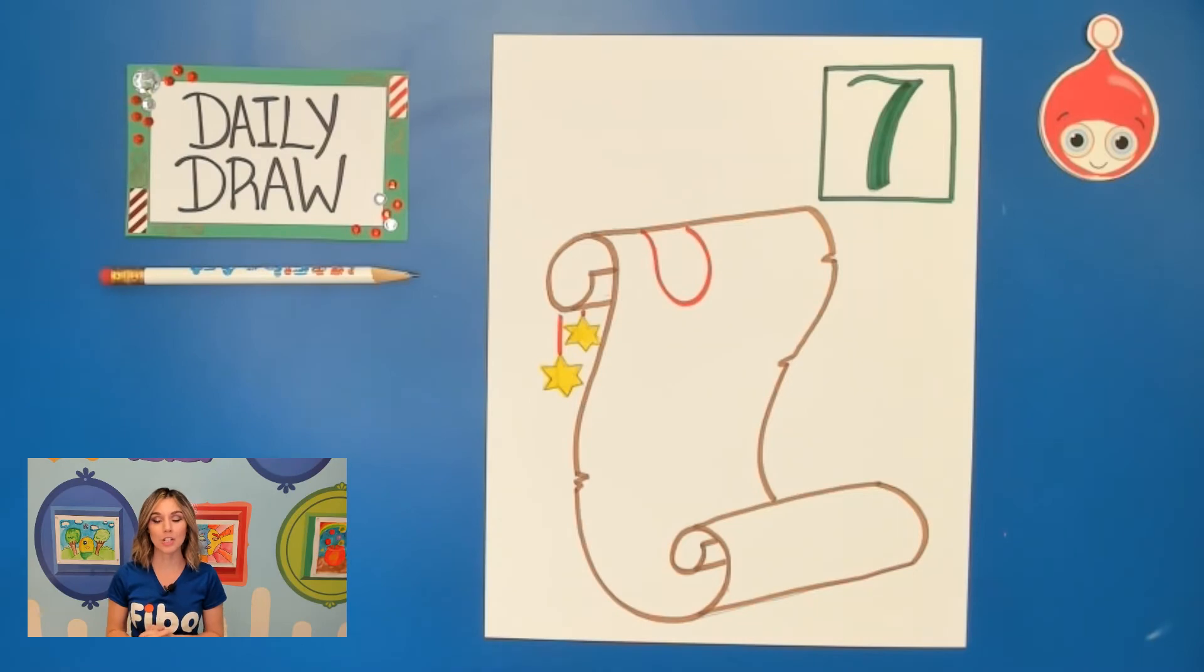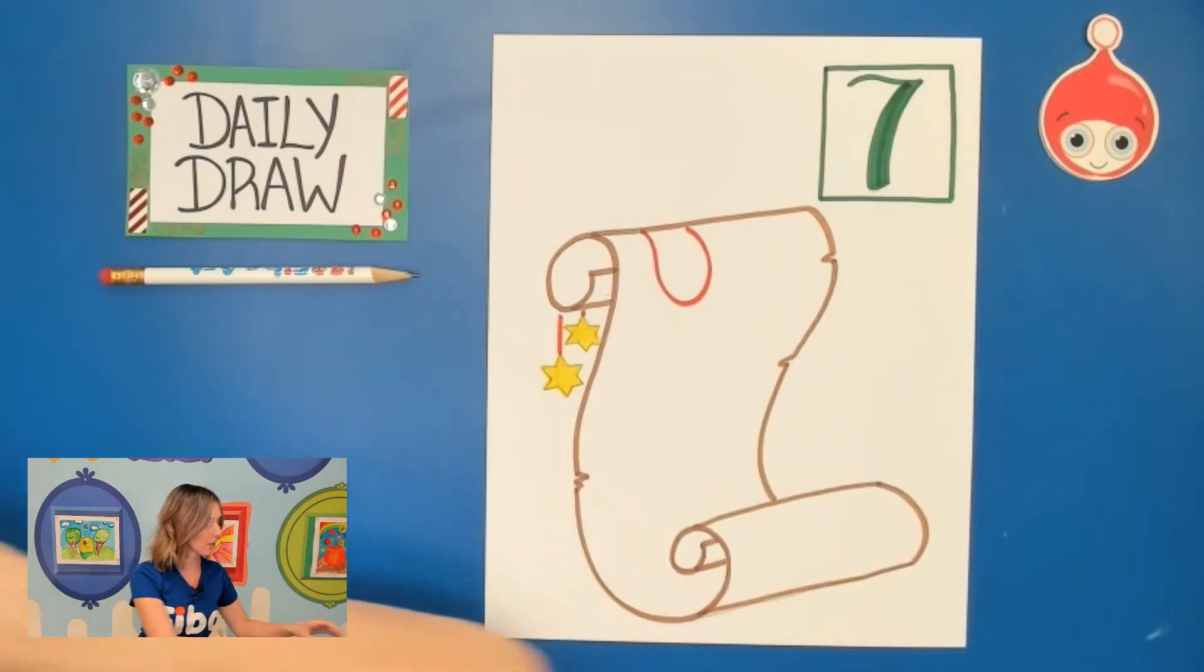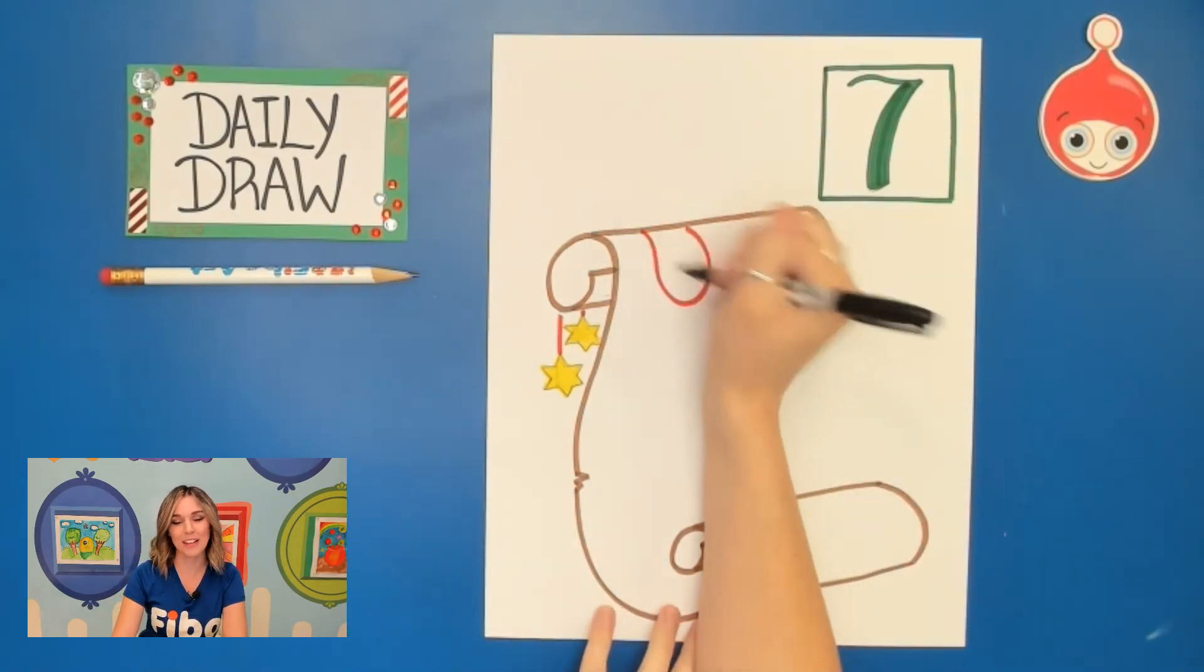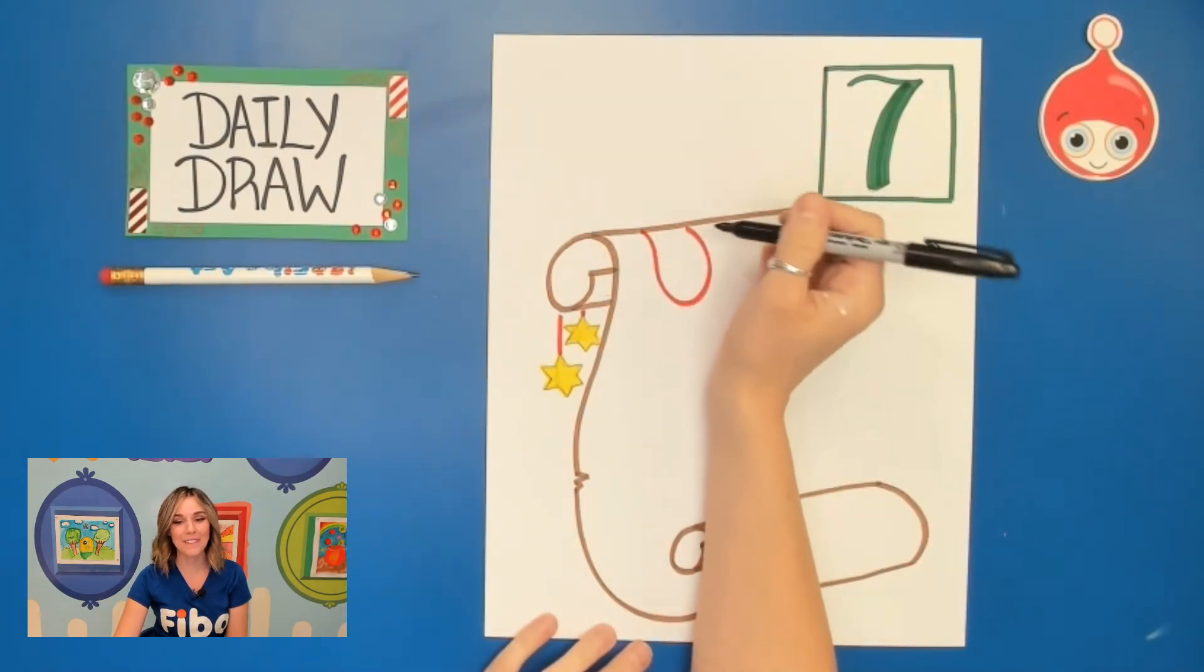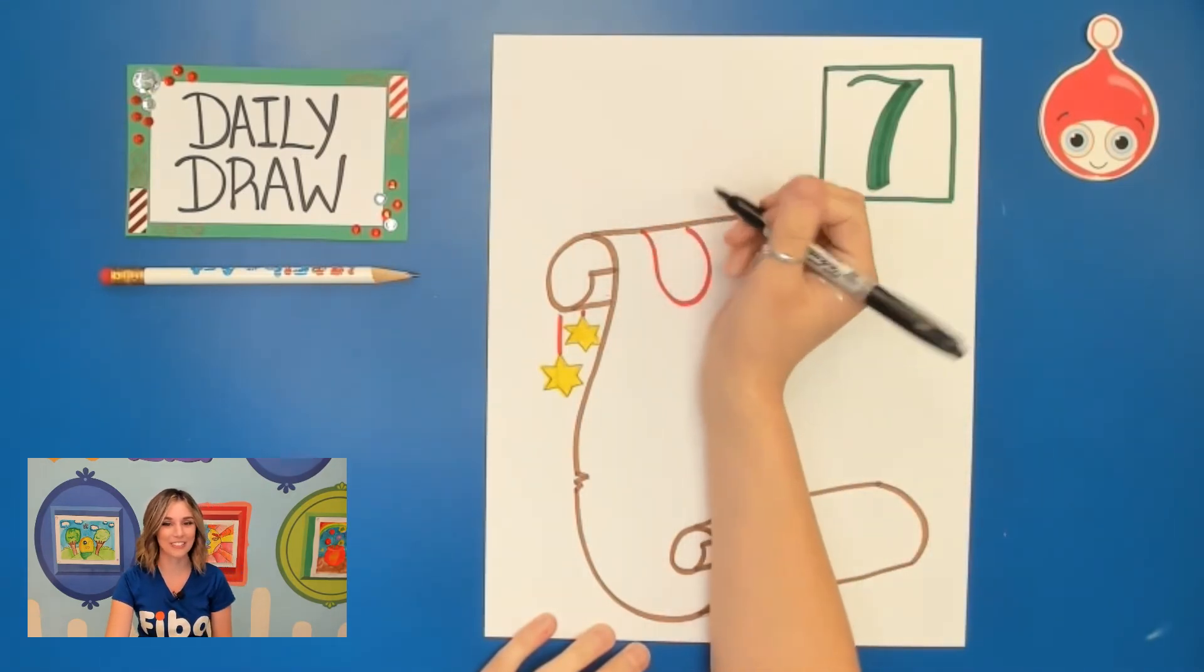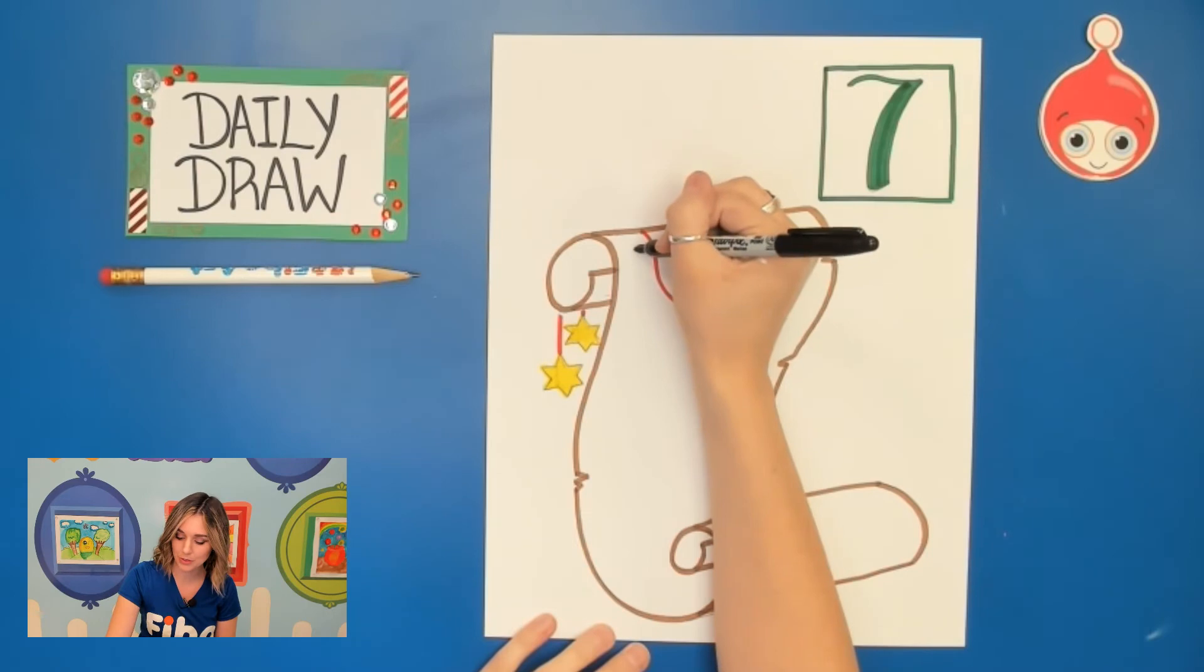Now, before I add that chalk pastel, if you would like to, you can also grab that Sharpie. And you can start to write some names of people in your family, maybe, or some of your friends. So I'm just going to write a few of our friends here at FIBO. So we definitely have FIBO on that Christmas list.